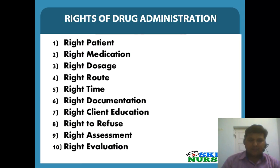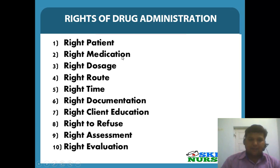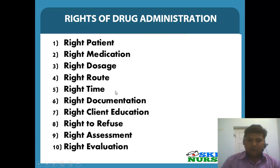Now let us discuss the 10 rights of drug administration. Previously we discussed 5 to 6 rights, but here we are covering all 10. Right patient: ask the patient to tell their name. Right medication: check three times while withdrawing the medication from the cupboard, cross-check with your medication card, and check again while withdrawing medication from the ampoule. Right dose: check the available dose against the ordered dose. Right route: select the right route and right site for medication administration. Right time: check the frequency of medication — it may be OD, BD, QID, TDS, or CHS.